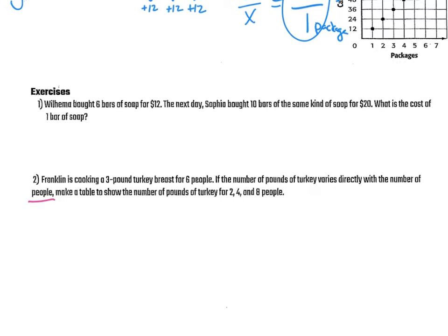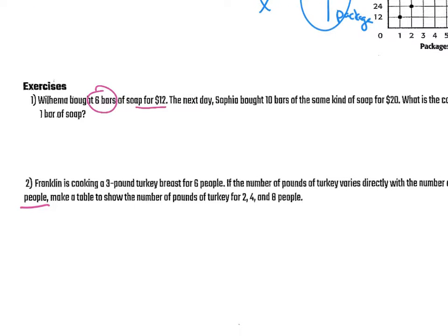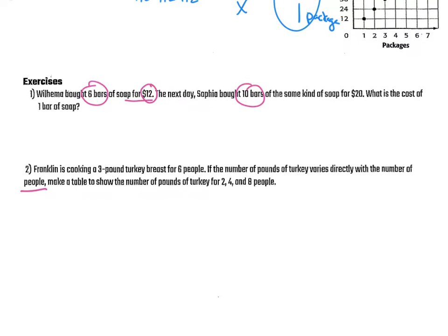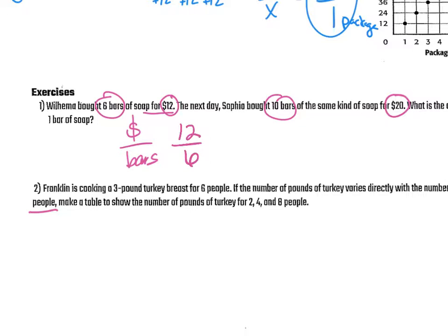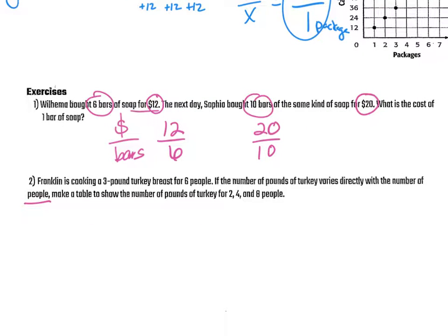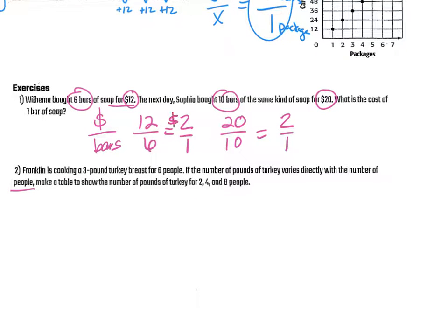Down at the bottom, we don't have a visual, it just gives us a story. Wilhelmah bought six bars of soap for $12. The next day, Sophia bought 10 bars of the same kind of soap for $20. What is the cost of one bar of soap? So anytime there's money, we want to put that on top. So dollar signs on top of the bars of soap. If it costs $12 for six bars, and it costs $20 for 10 bars, I'm going to write them both down, and I'm going to solve for both of them just to make sure that it's the same. So 12 divided by six is two over one. And 20 divided by 10 is two. Also two over one. So both of them, $2 for one bar of soap.